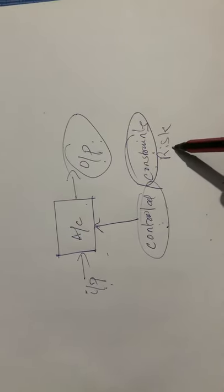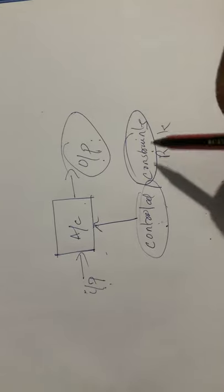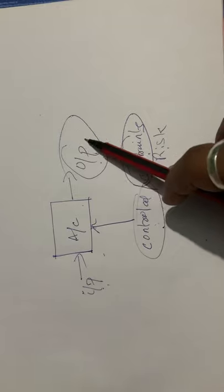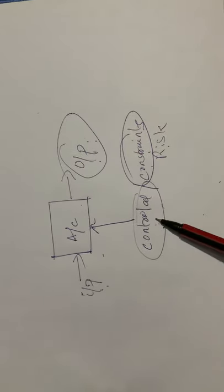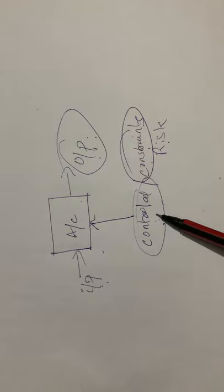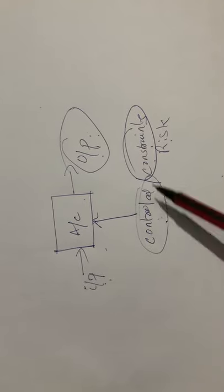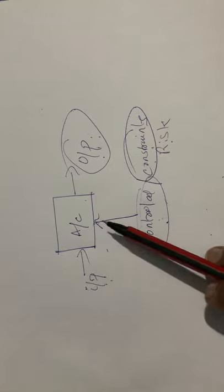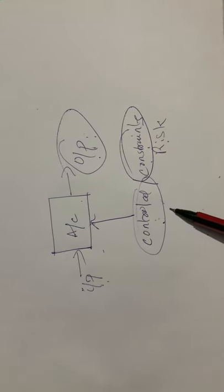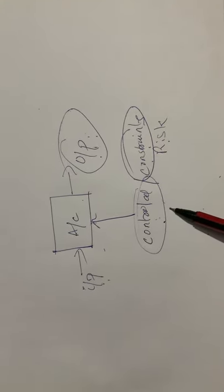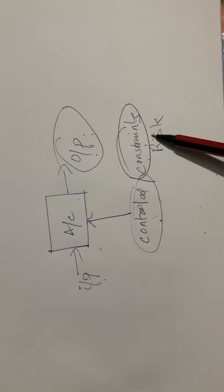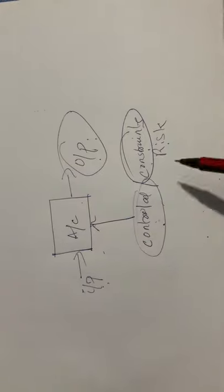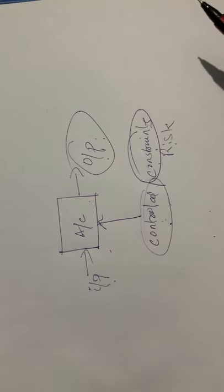So all these are the factors which come under constraints or we can also say that as risk. Basically, a process is nothing but a set of activities which will be having some input to get the desired output, but that will be controlled, and there will be constraints. Activity is not alone - it will be having controlled parameters as I explained previously and the constraints like risks.